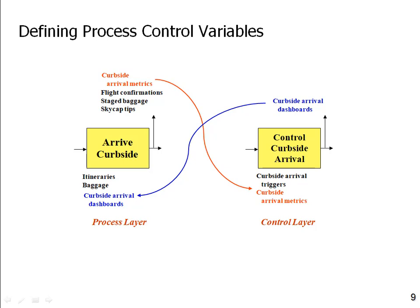Think of this as a feedback loop: the trigger instantiates the dashboard, the dashboard goes into the process, metrics come out and feed back into the control process, which updates the dashboard, which feeds back into the 'arrive curbside' process. This cycle continues constantly as the process is being carried out. The control side is also where you define how you'll issue a scorecard for the overall process — the management scorecard that tells management how the 'arrive curbside' process is working. So the control variables are: triggers, metrics, dashboards, and scorecards.